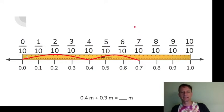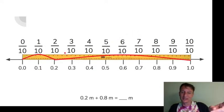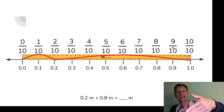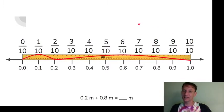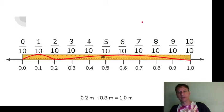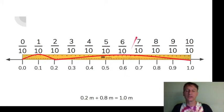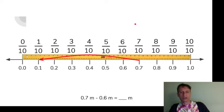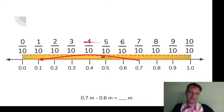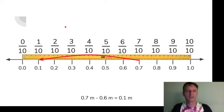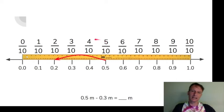Now I'll throw you a curveball — just when you start to get good: two tenths meter plus eight tenths meter. We could say either ten tenths meter or one meter. I write it as 1.0, but I read it as 'one meter.' Now subtraction: seven tenths meter minus six tenths meter is one tenth meter. Five tenths meter minus three tenths meter is two tenths meter. Beautiful!